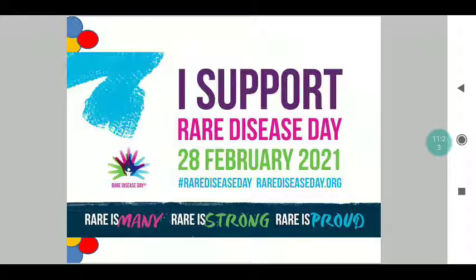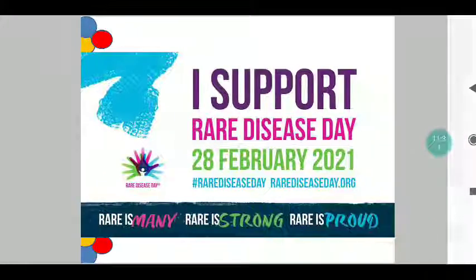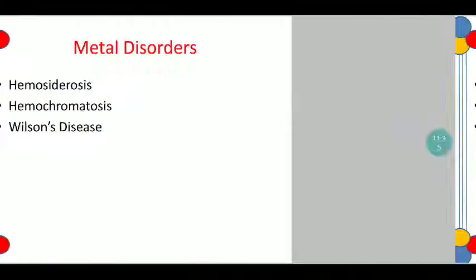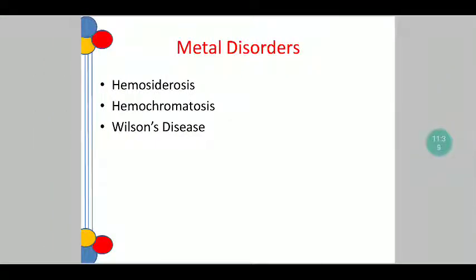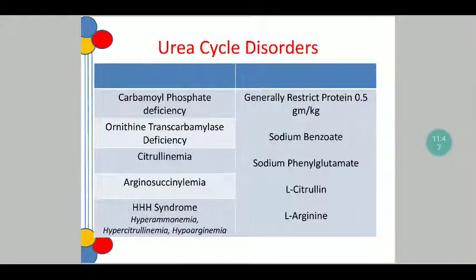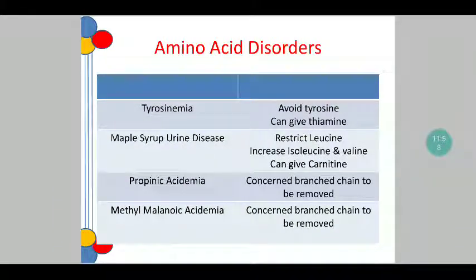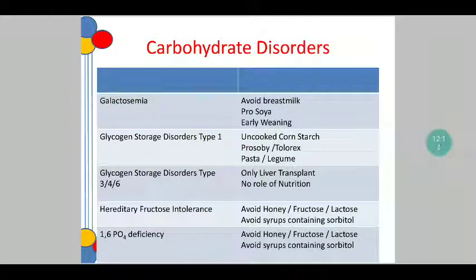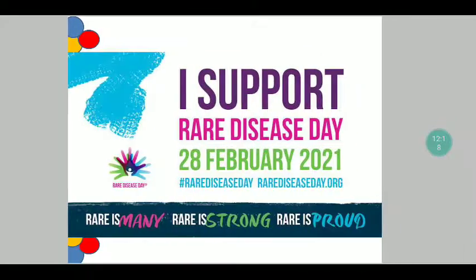With that, I have briefly touched upon everything as far as the dietary aspect is concerned. To quickly sum up — mitochondrial disorders: only treatment is liver transplantation. Metal disorders: avoid the respective toxin in the diet. Fatty acid disorders: restrict fat and give carnitine. Urea cycle disorders: restrict protein, give sodium benzoate and sodium phenylglutamate, and use citrulline or arginine depending on the deficiency. Amino acid disorders: avoid or restrict certain specific amino acids; specialized products are available for removing specific branched chain amino acids. Carbohydrate disorders: avoid certain food items and give certain food items as discussed.